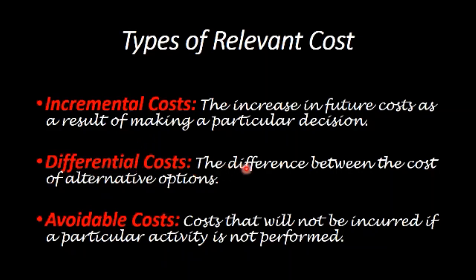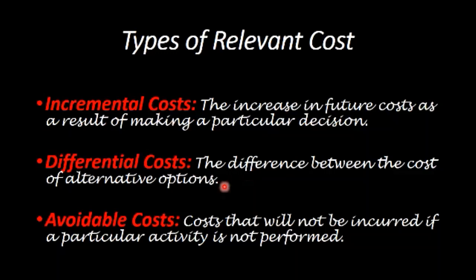Differential costs are the difference between the costs of alternative options. For example, in a make or buy decision, if making the item costs X dollars and buying the item costs Y dollars, then the difference X minus Y will represent an inflow or outflow. We also have avoidable costs — costs that will not be incurred if a particular activity is not performed or if a decision is not taken. Avoidable costs usually take the form of cost savings.